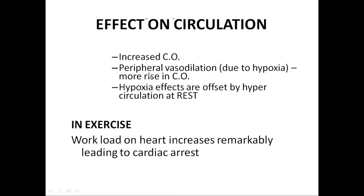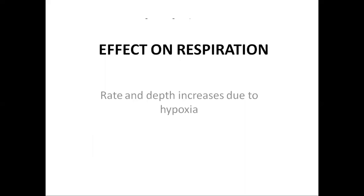The effect of anemia on circulation: there will be increased cardiac output and peripheral vasodilation due to hypoxia, because there is low RBC count and low hemoglobin level. Oxygen is mainly transported into the tissues in combination with hemoglobin, so hemoglobin deficiency causes hypoxia, resulting in increased cardiac output. In anemia, low RBC count reduces resistance to blood flow, resulting in more venous return to the right side of the heart, increased stroke volume, and rising blood pressure. However, during exercise, the workload on the heart will be remarkably high, which can lead to cardiac arrest.